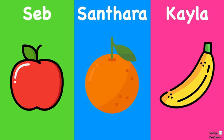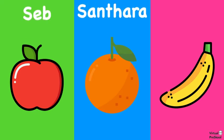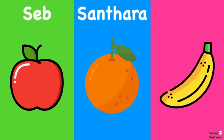So first, let's start by reviewing the vocabulary words. Apple is seib, orange is Santara, and banana is Kela. Let's do those again. Apple is seib, orange is Santara, and banana is Kela.